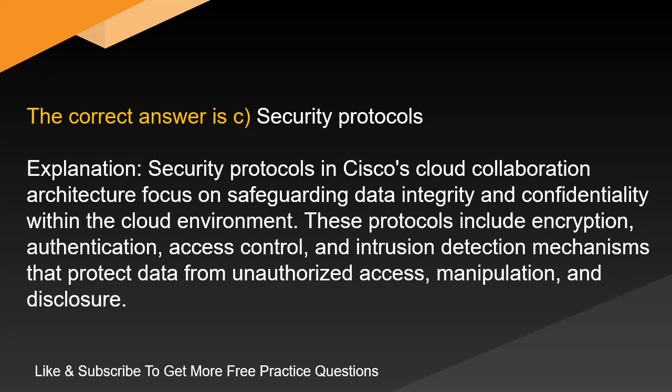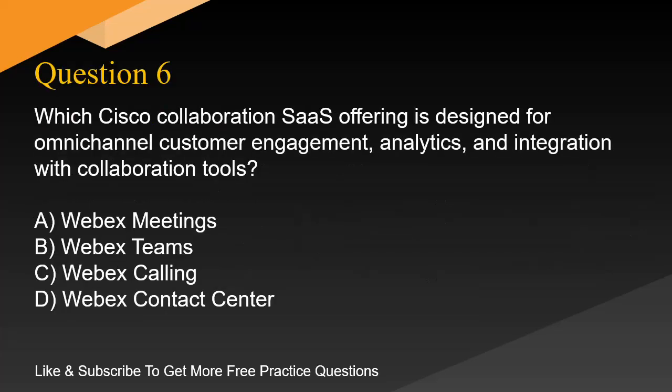The correct answer is C. Security Protocols. Security protocols in Cisco's cloud collaboration architecture focus on safeguarding data integrity and confidentiality within the cloud environment. These protocols include encryption, authentication, access control, and intrusion detection mechanisms that protect data from unauthorized access, manipulation, and disclosure.